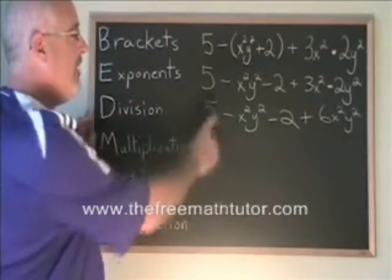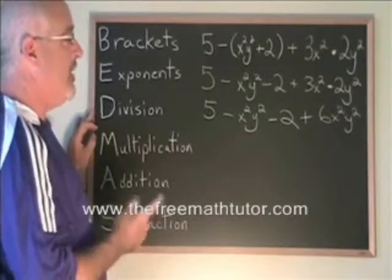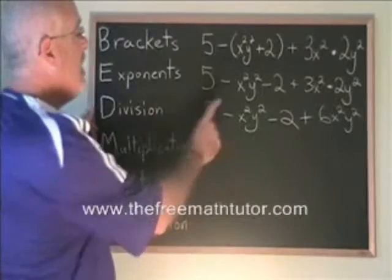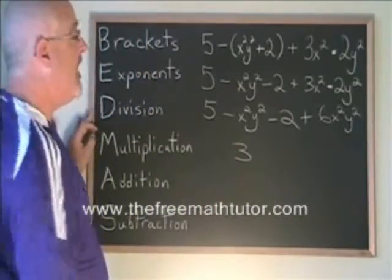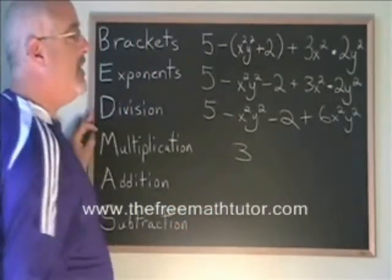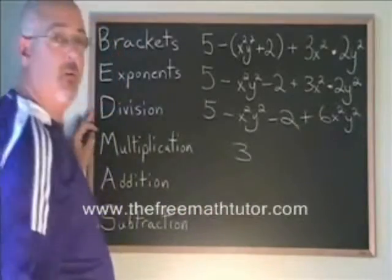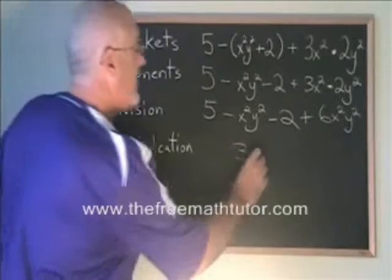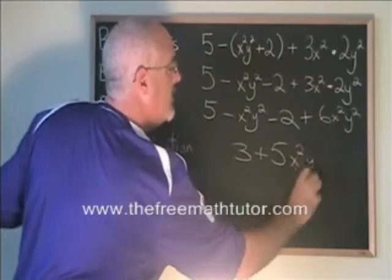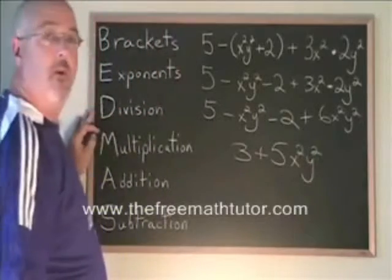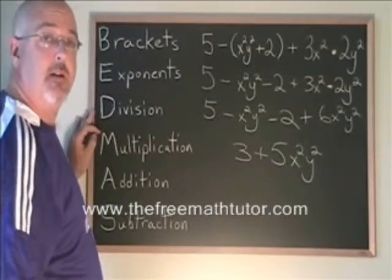I copy down the rest of the question. Now I have nothing but subtractions and additions, and I am going to combine similar terms. With the constant terms, we have 5 minus 2, which gives us 3. With the x squared y squared, we have negative 1 x squared y squared plus 6 x squared y squared, which gives us positive 5 x squared y squared. There are no more operations that can be done, because I no longer have any similar terms, so this is the answer.